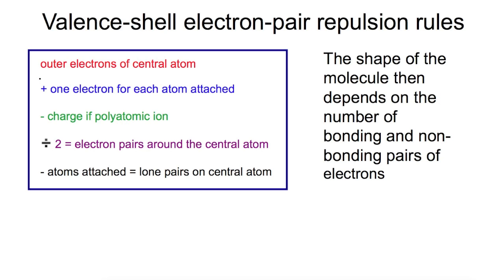If you have lone pairs, they can be found by taking away the number of atoms which have been attached. Lone pairs, or non-bonding pairs of electrons, have a big impact on the shape of a molecule, as they have more repulsion than bonding pairs, which we will come onto later.